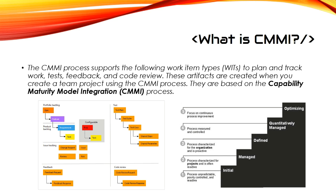Now let's talk about what the five levels mean for the Capability Maturity Model Integration. There are five levels. Level one is Initial — the process is unpredictable, poorly controlled, and reactive.